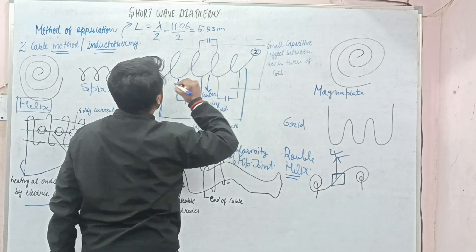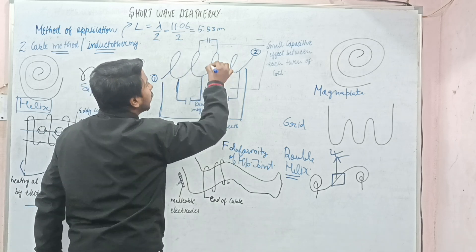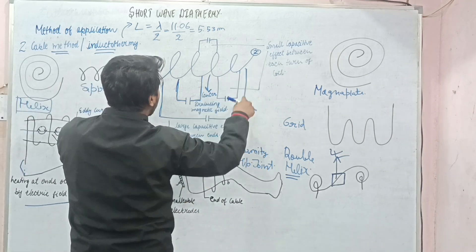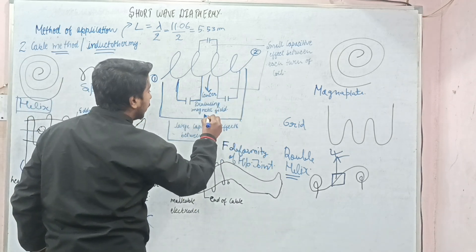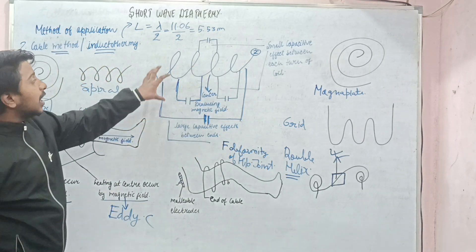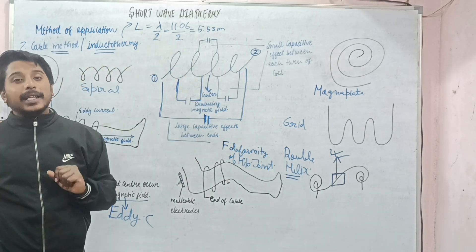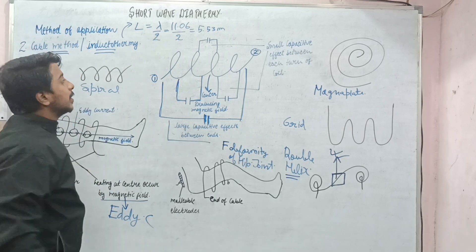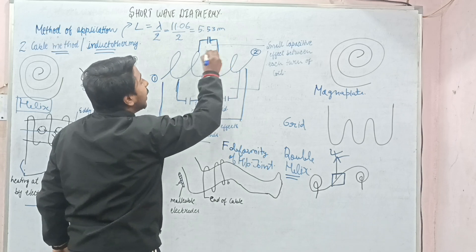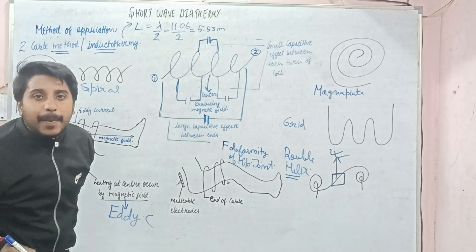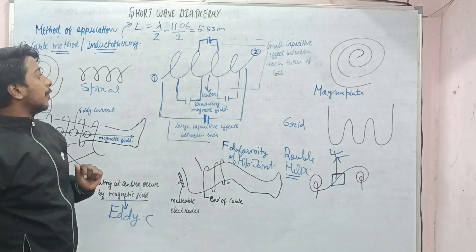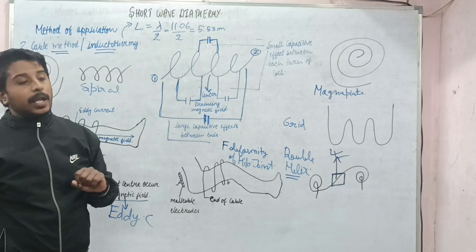If you take the two ends of the cable, they act as a large capacitor — because the whole wire is carrying some charges, and those charges are contained in the wire, so it behaves like a capacitor. If we take individual coil endings, they also act as a capacitor, but with a smaller capacitive effect because it is just between two coils.